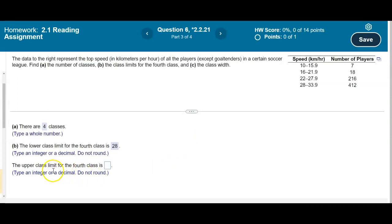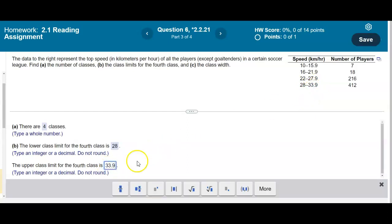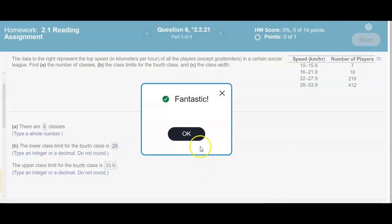Now they want us to find the upper class limit for the fourth class. Well the upper class limit is 33.9. So therefore there's 33.9 and there is our result.